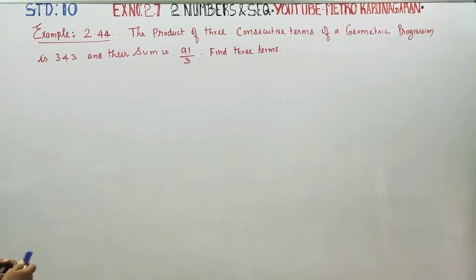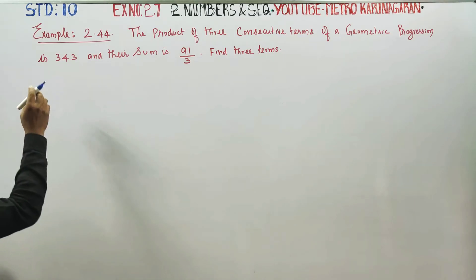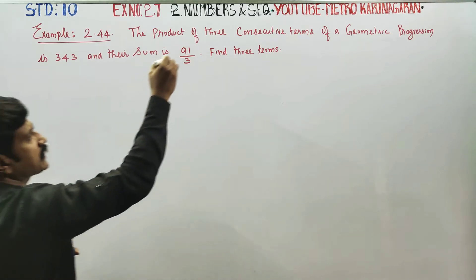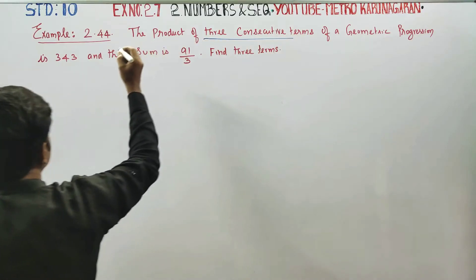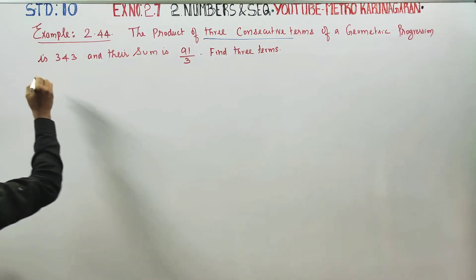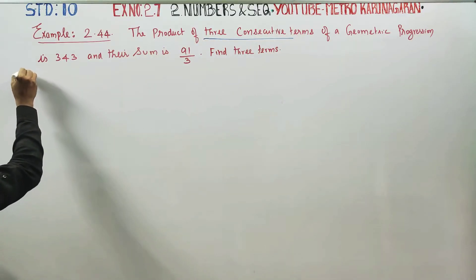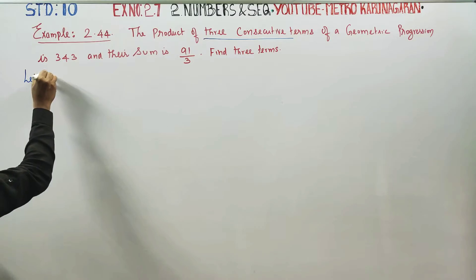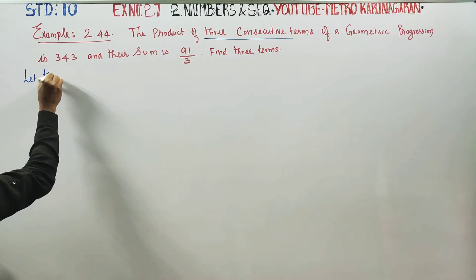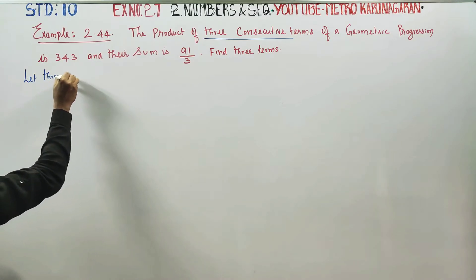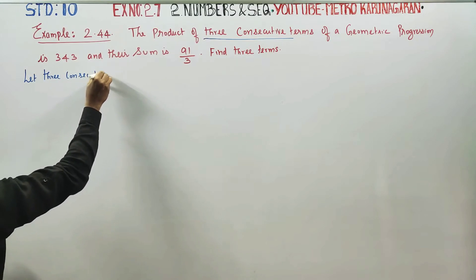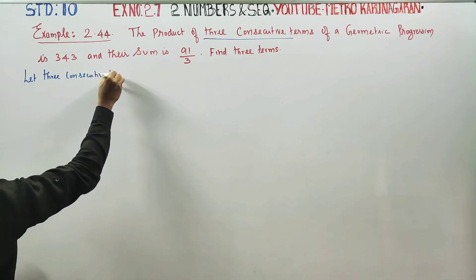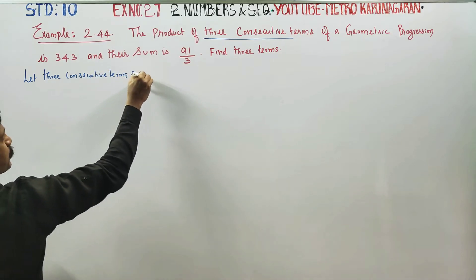The product of three consecutive terms of a geometric progression is 343. We need to work with three consecutive terms of a geometric progression.